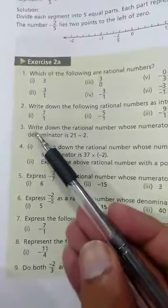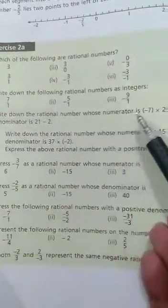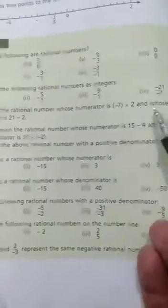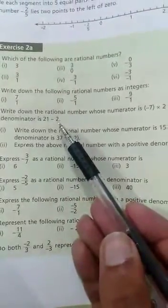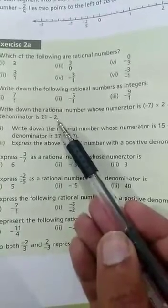Question number 3. Write down the rational number whose numerator is minus 7 multiply 2 and whose denominator is 21 minus 2. By now you all know what is a numerator and what is a denominator.